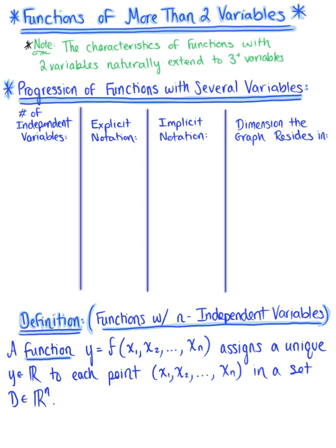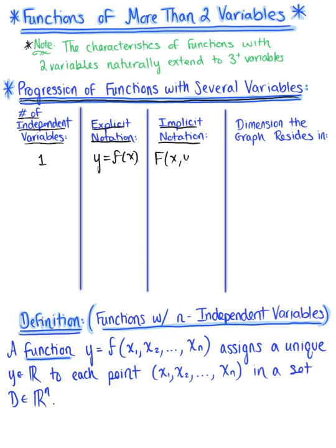To help us see this natural extension, let's think about the progression of functions with several variables. The first column represents the number of independent variables in your function. When we first began our calculus journey, we had functions with one independent variable. The explicit notation is simply y equals f of x. The implicit or equation form is capital F of x, y equals zero. A function y equals f of x lives in R², so the graph resides in two dimensions.